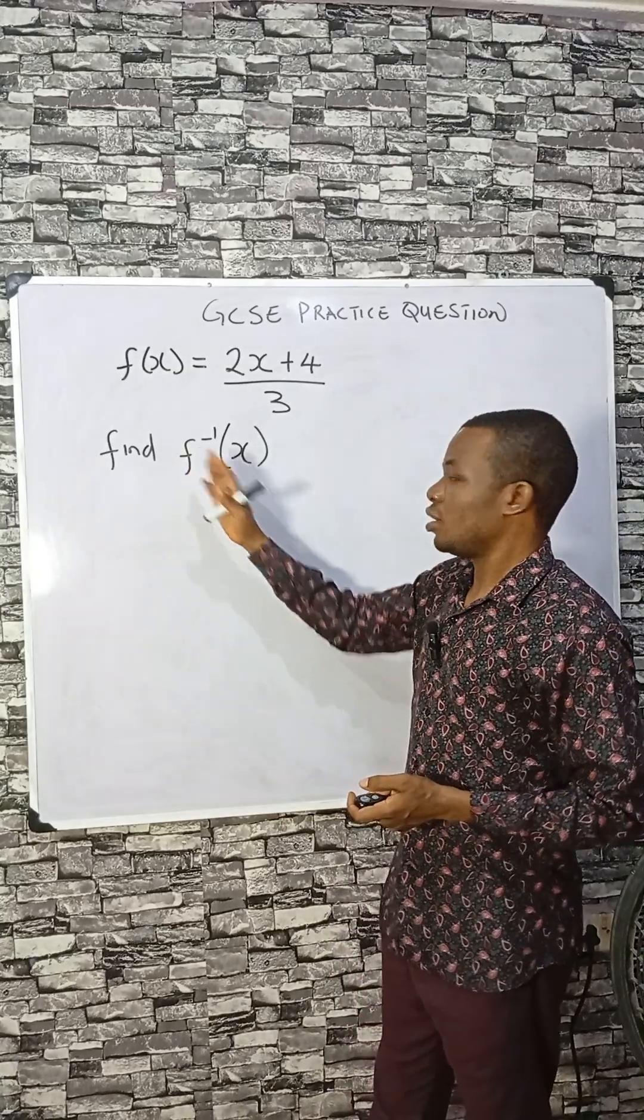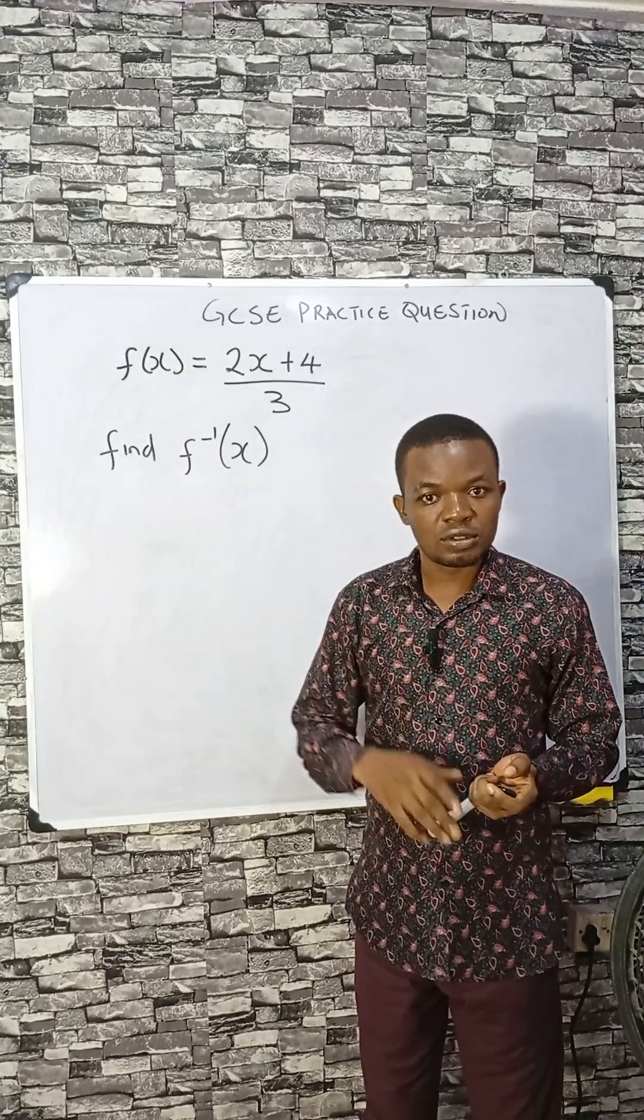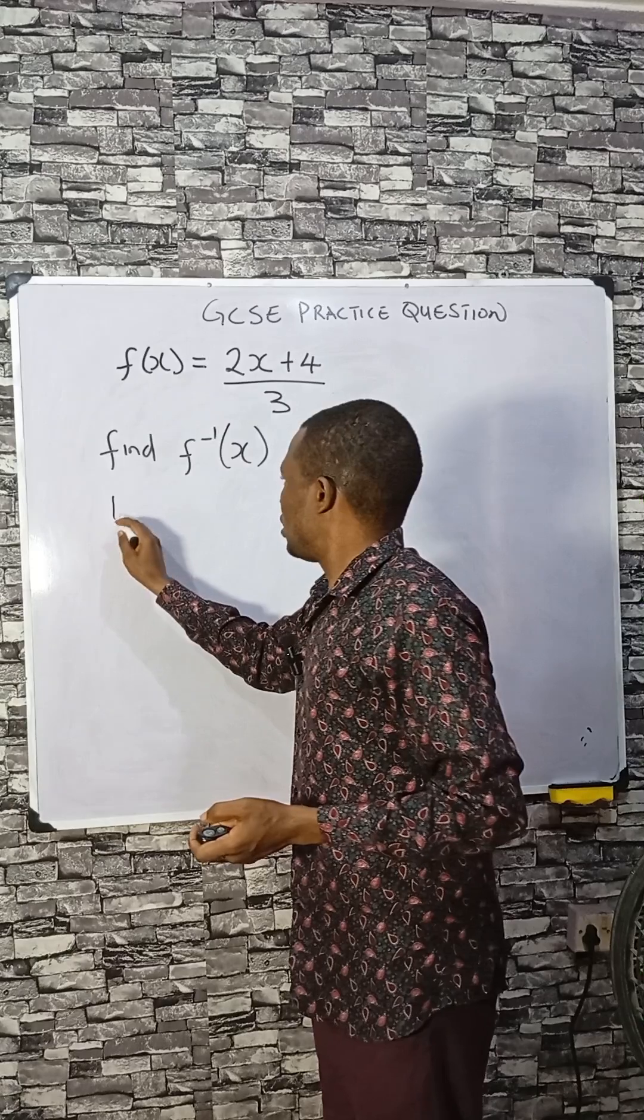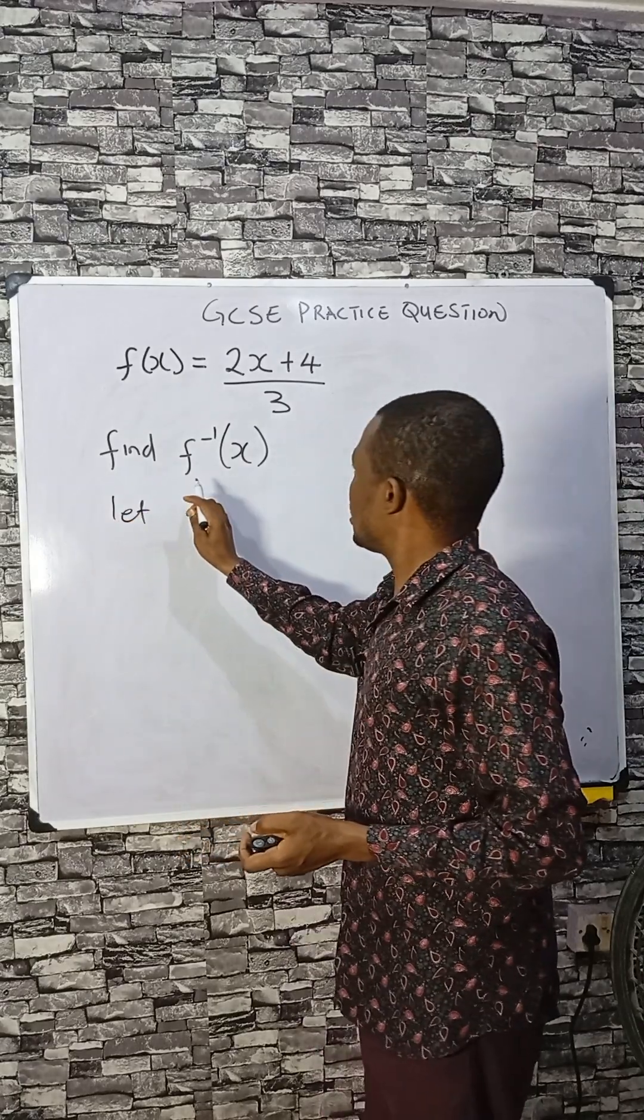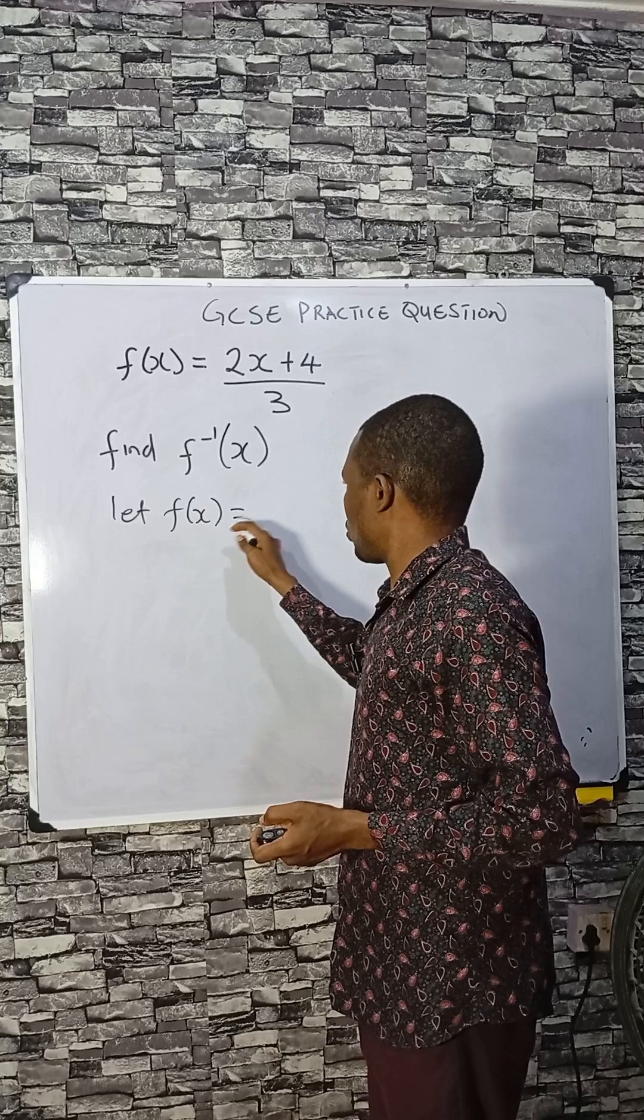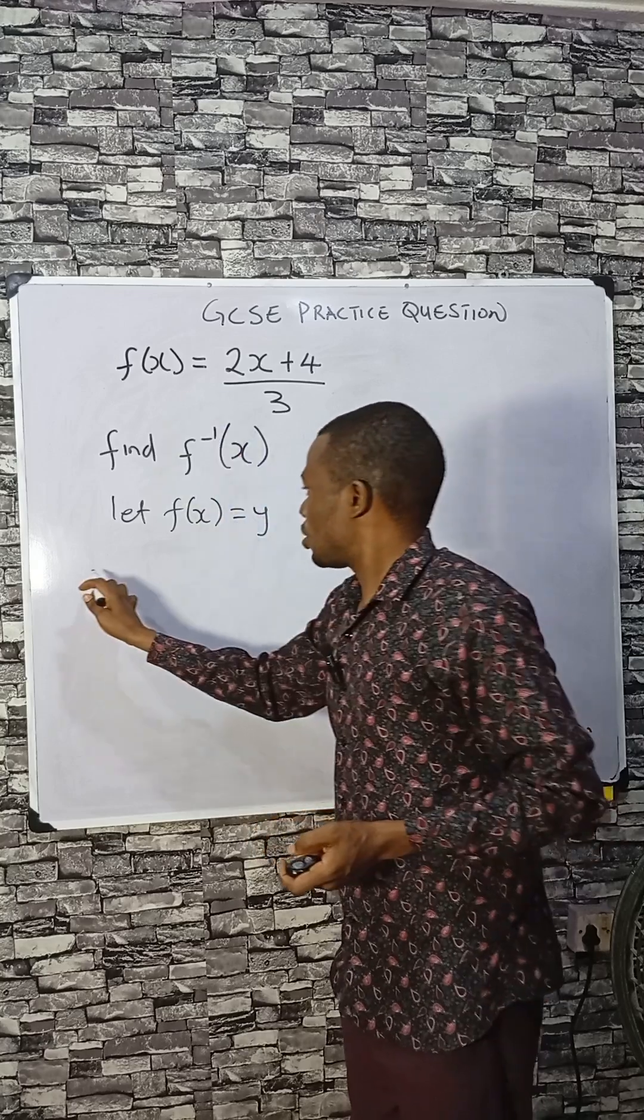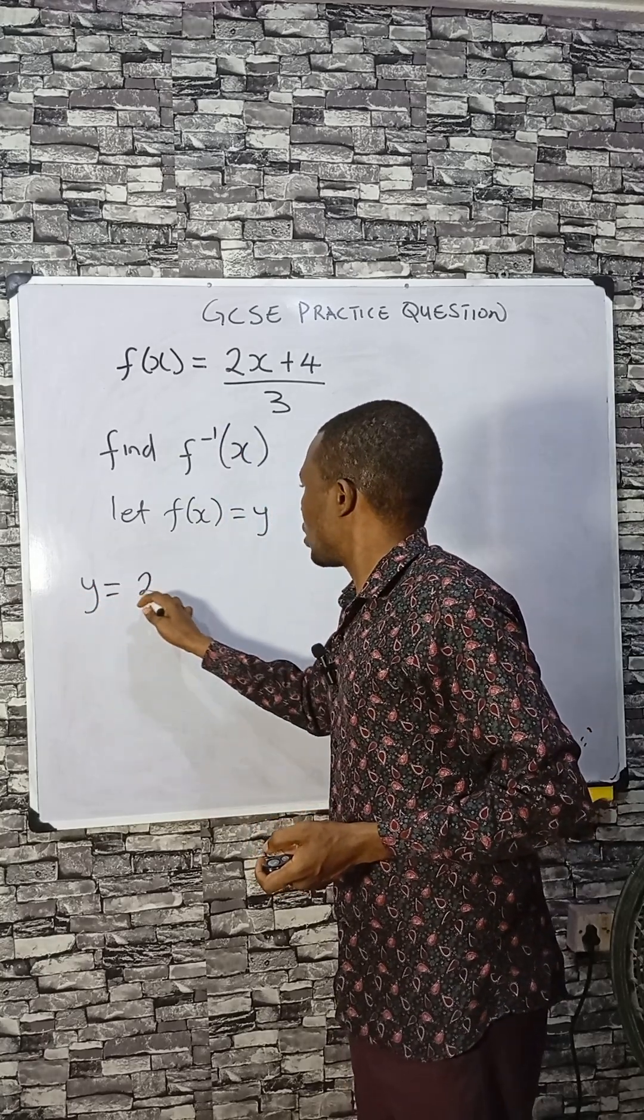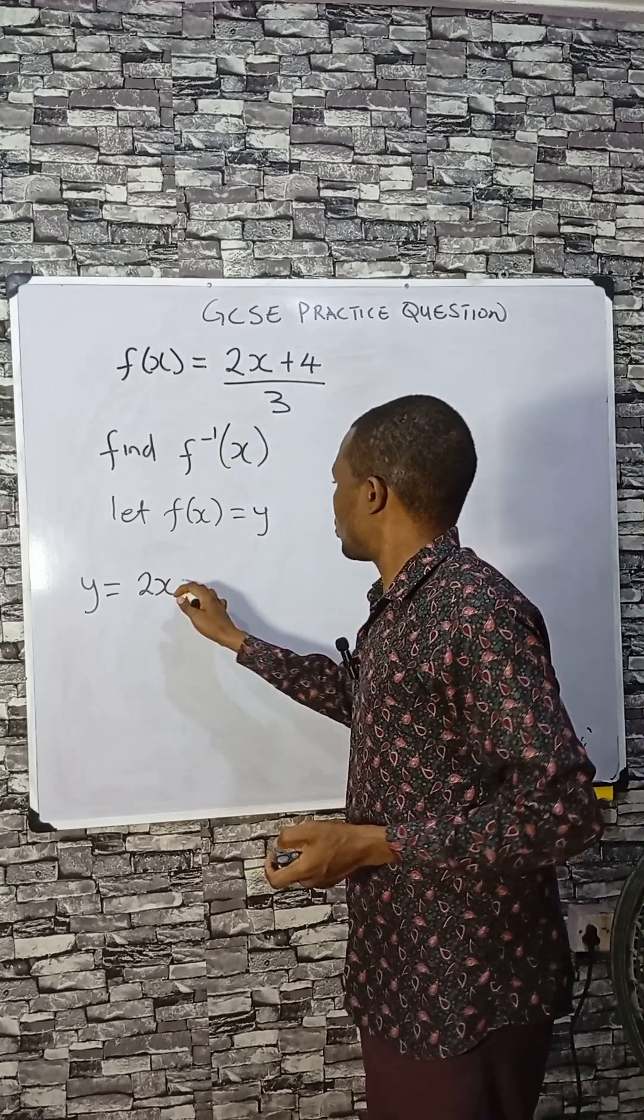Finding the inverse function here can be very simple. Just follow these three steps. First, let f(x) equal y, so we have y equals 2x plus 4 divided by 3.